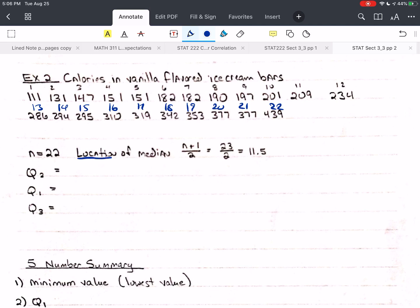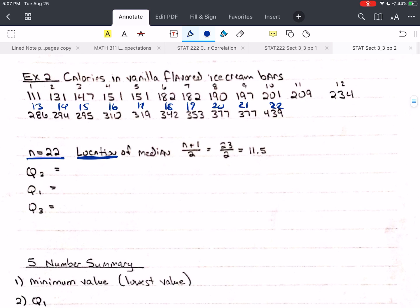Now, the easiest way to find this, again, the location. Remember, this is the location. It's not the median. It's the location of the median. There's 22 values. So 22 plus 1 is 23. I divide by 2. I get 11 and a half. So here's the 11th. Here's the 12th. I need halfway in there. That's 209 plus 234 divided by 2. Now, that is 443 divided by 2.